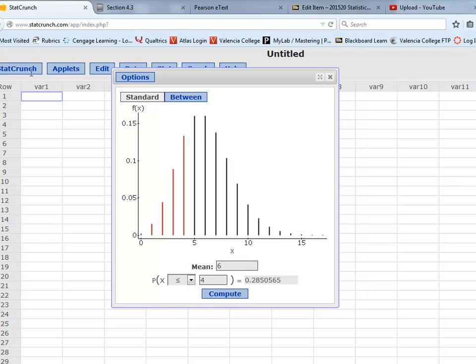there's the cumulative value. You can see here zero heart transplants, 1, 2, 3, 4, highlighted in red. And there's our total value.